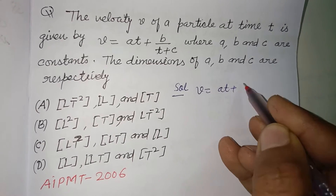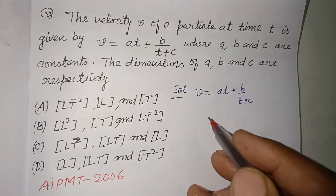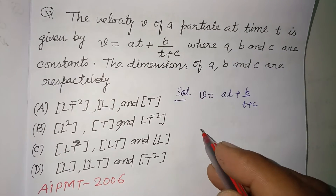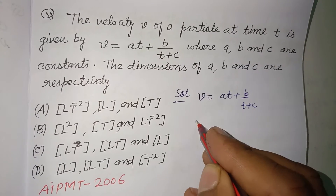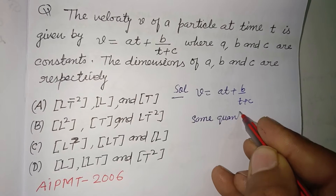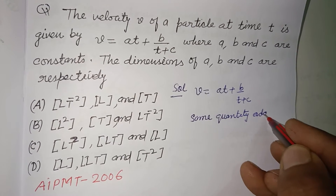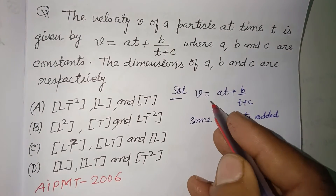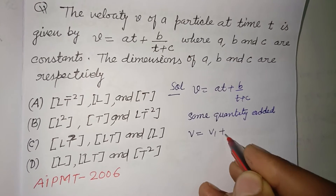Since v equals at plus b over t plus c, you know the principle of homogeneity of dimensions — that velocity can only be added to velocity. So each term on the right-hand side must also have the dimension of velocity.